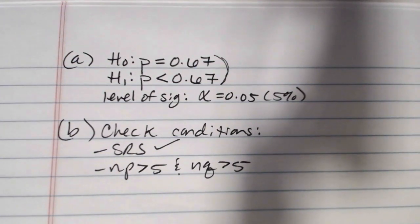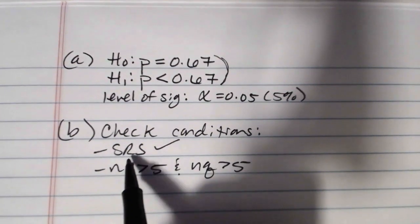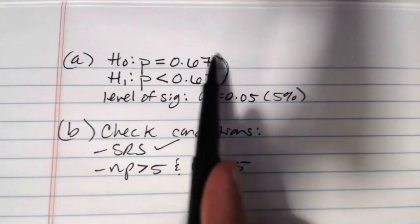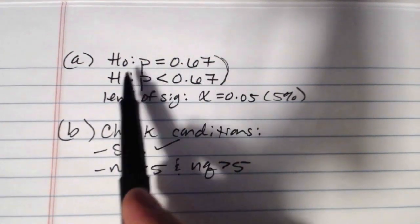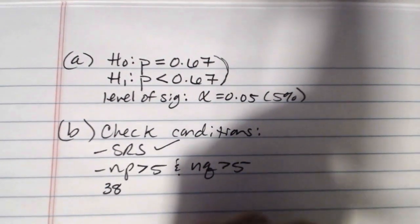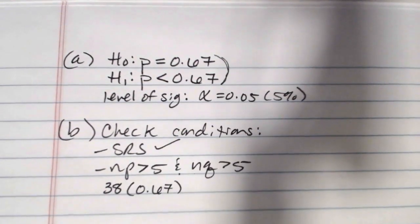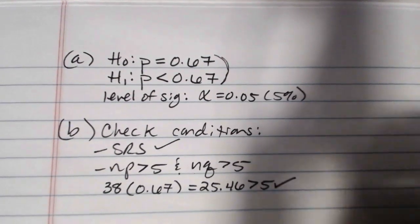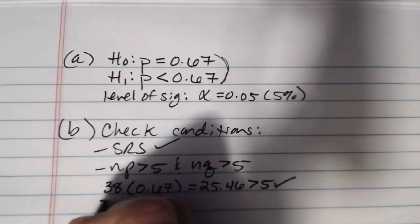Now note that this is different from when we did this in the section on confidence intervals. There we were using NP hat and NQ hat because we didn't have values for P and Q. Here we actually have a hypothesized value for P, so we can actually compute these directly. Our N was 38. Our hypothesized P value is 0.67. When I multiply 0.67 by 38, I get 25.46, which is definitely greater than 5.